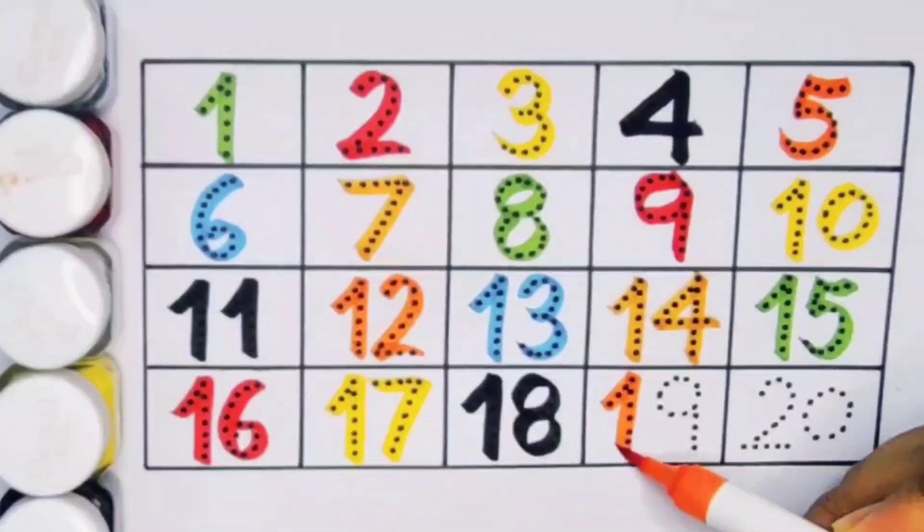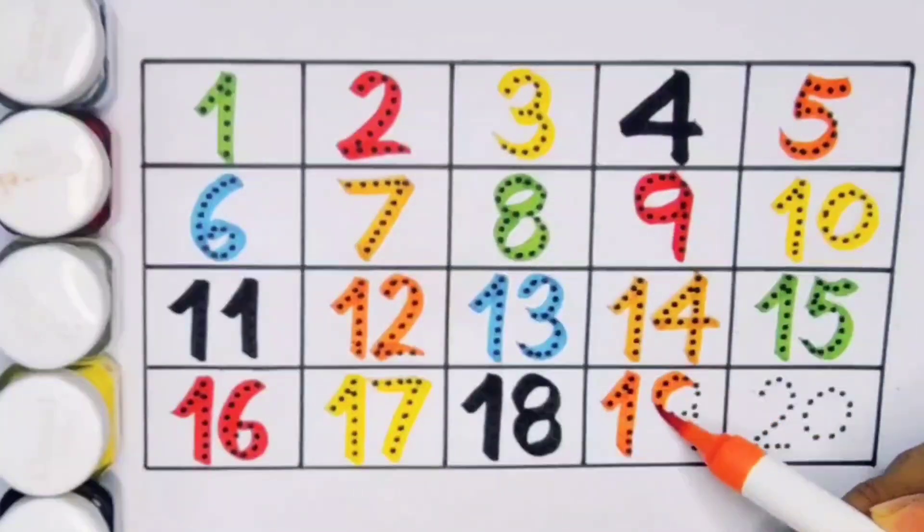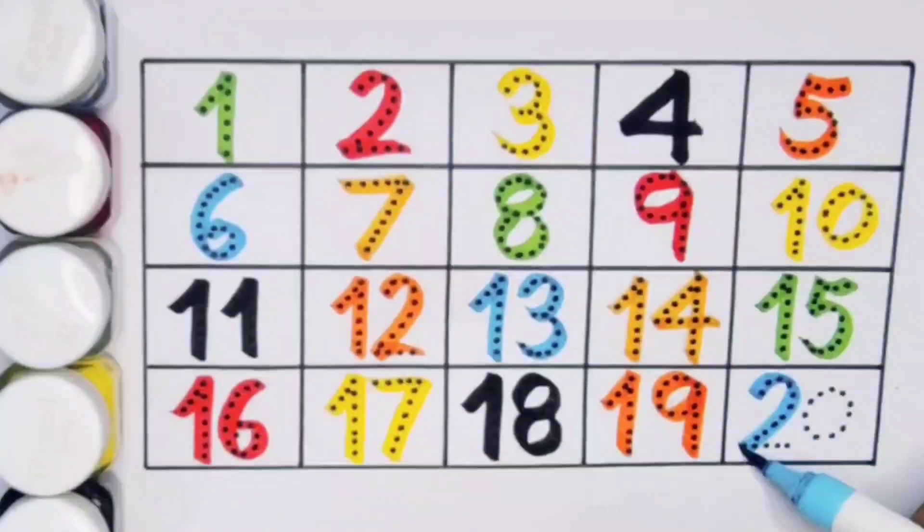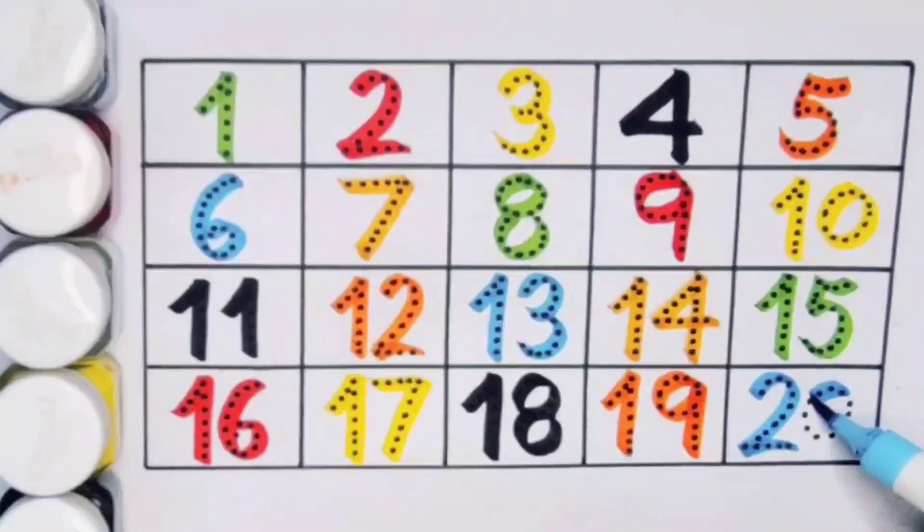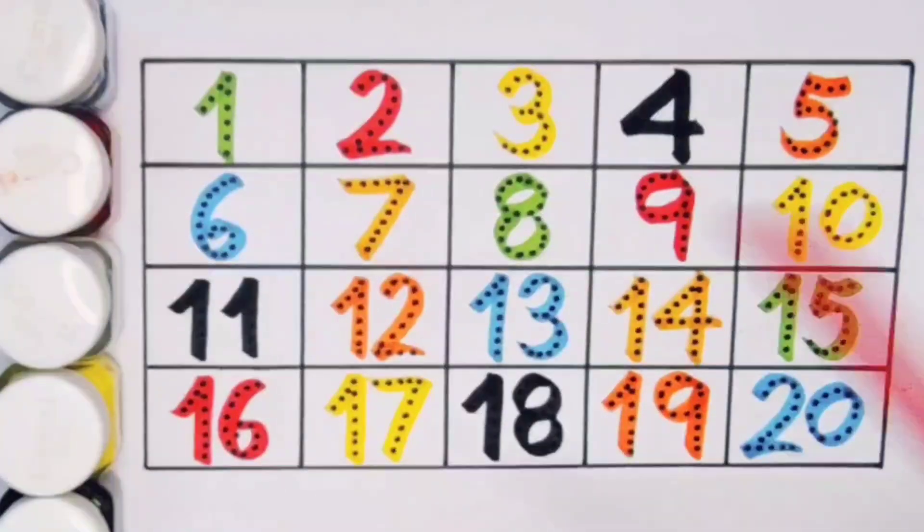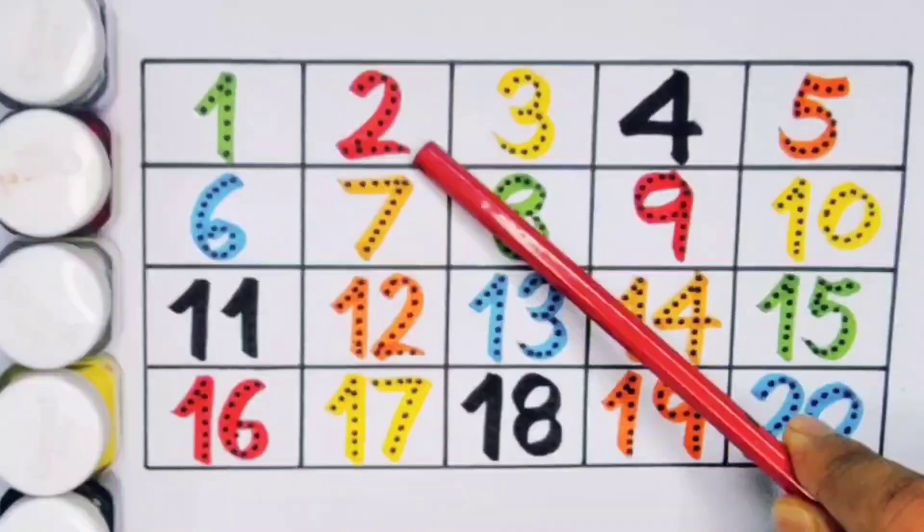Next kids, nineteen, one nine, number nineteen. Next kids, twenty, two zero, number twenty. What we learned: we learned one, two, three...